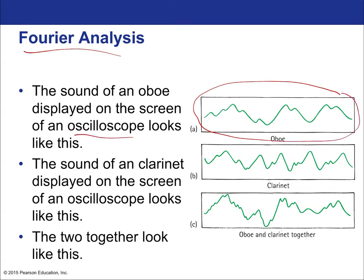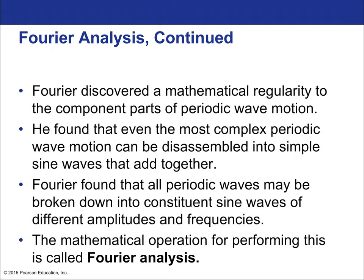The oscilloscope is a device that measures the electrical signal produced by some sort of vibrating circuit. The sound of a clarinet displayed on the screen of an oscilloscope might look like a different waveform, and then the two together would look like the composite of the two.